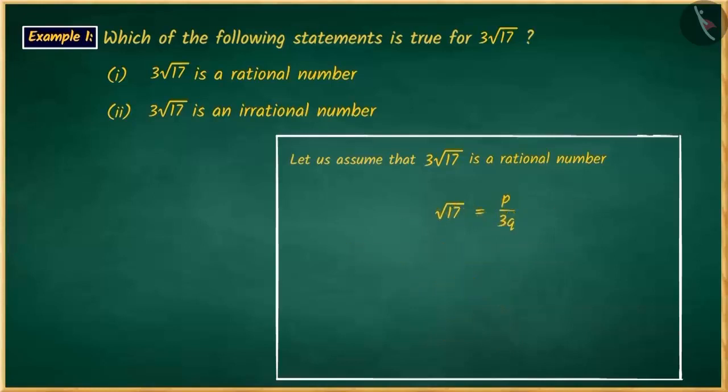You may remember that the division of rational numbers is also a rational number. Thus, we can say that since p and q are rational numbers, then the value on the right side, which is p upon 3q, is also a rational number. Therefore, the square root of 17 will also be a rational number.